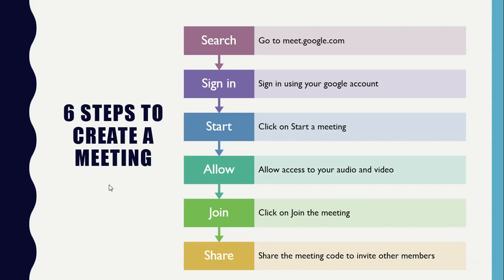It is mandatory that you should have a Google account. If you don't have one, first we have to create a Gmail account, then we have to sign in using that account. The third stage is to start a meeting. The fourth stage is to allow your audio as well as video — if you don't want to show your video you can turn it off, and if you don't want to speak you can mute your audio.